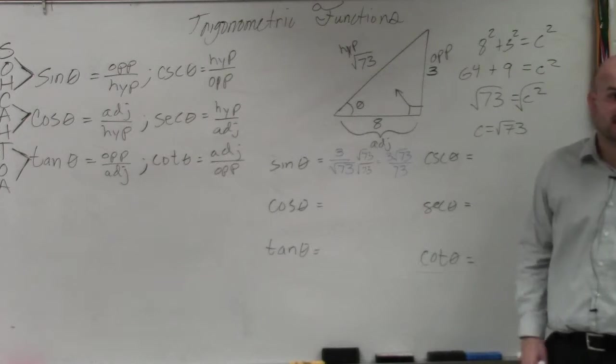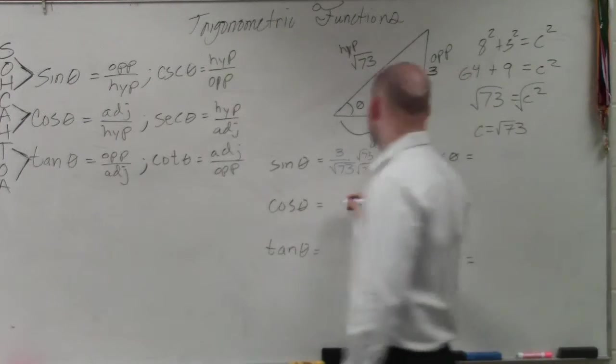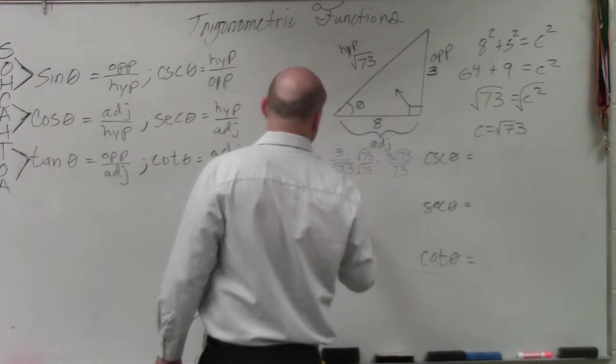OK. Now we do cosine. Cosine is going to be adjacent over hypotenuse. So that is 8 over the square root of 73.